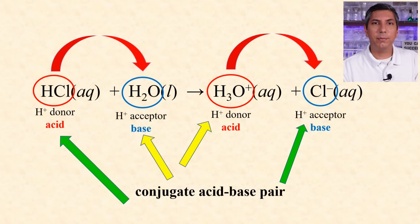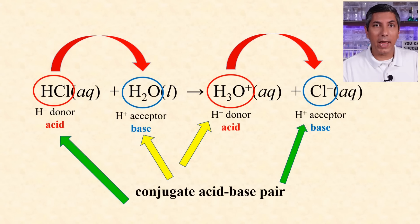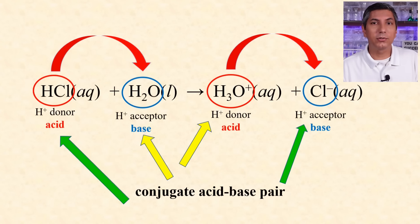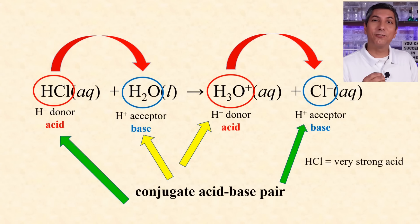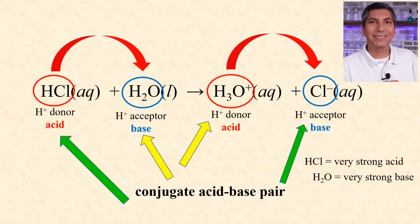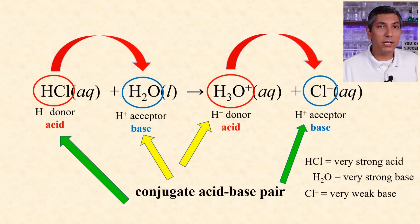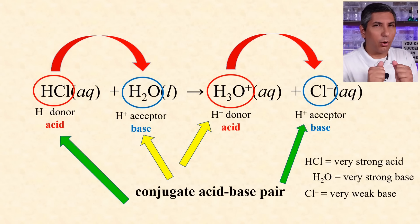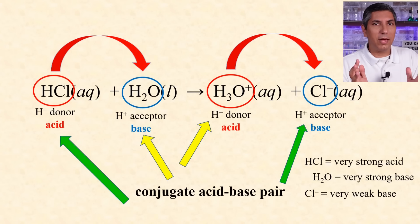In every conjugate acid-base pair, the acid has one more H+ than its conjugate base. Realize that water can act either as an acid or a base, depending on what it's reacting with. Since this reaction goes essentially to completion, hydrochloric acid is a very strong acid, as it donates pretty much all of its protons to water, and water is actually acting as a strong base in this reaction. On the other hand, chloride hardly accepts any protons at all, so it's an especially weak base. Remember: the stronger the acid, the weaker its conjugate base, and the weaker the acid, the stronger its conjugate base.